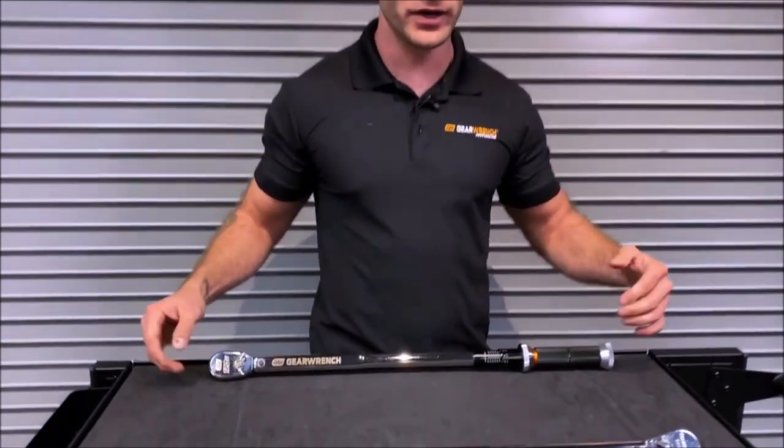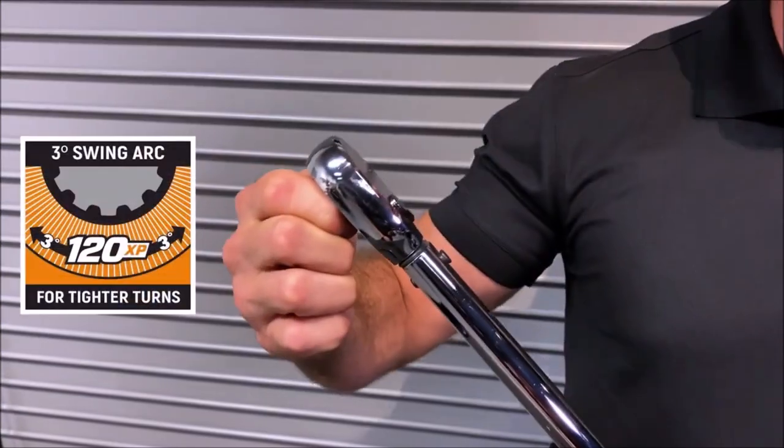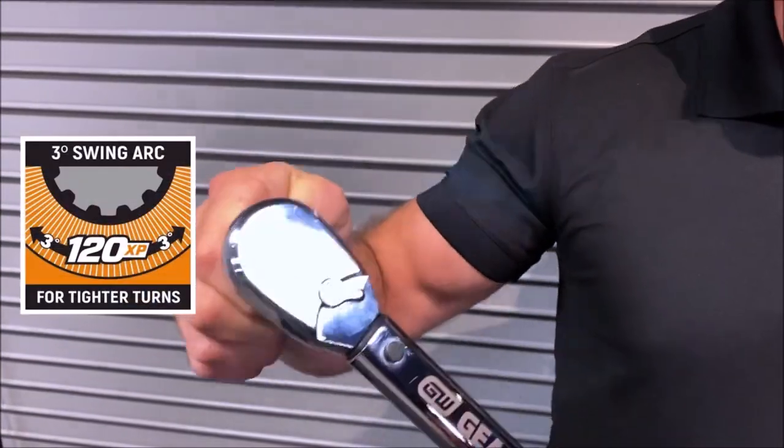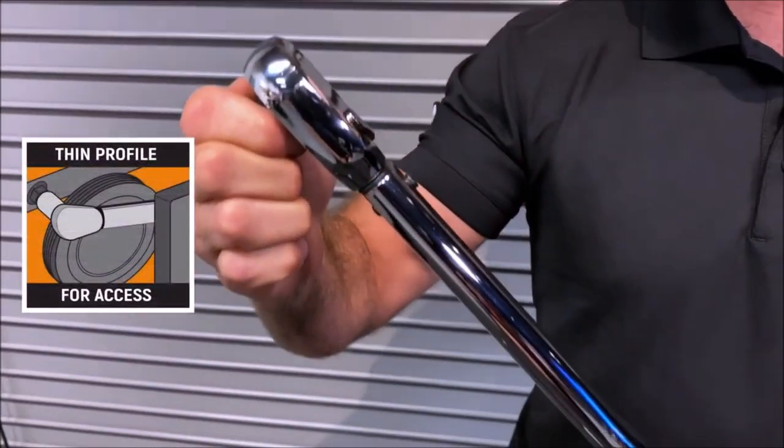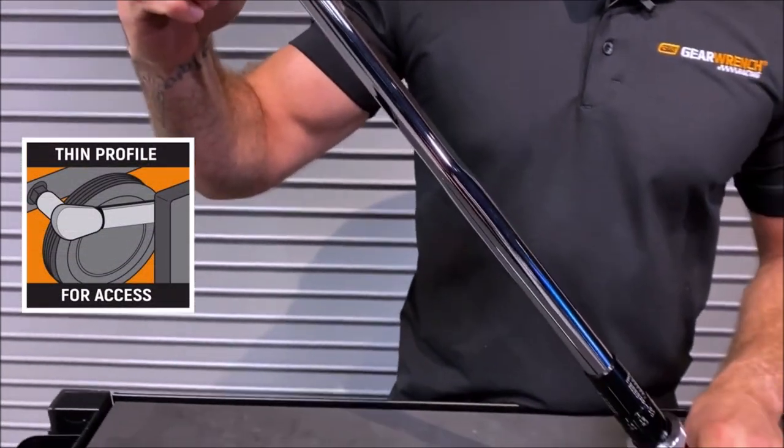This particular model wrench comes in a quarter inch output drive up through a one inch output drive as well as a 1,000 foot pound output. Moving up to our premium 120XP torque wrench, features a more slim head with a three degree swing arc ratchet, feeding into our neck down tube design for greater ease of access.